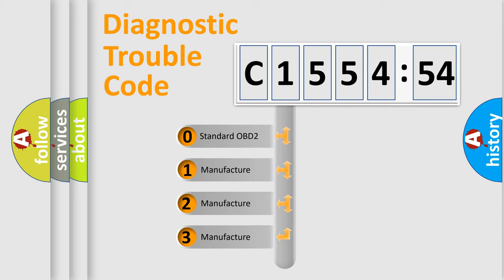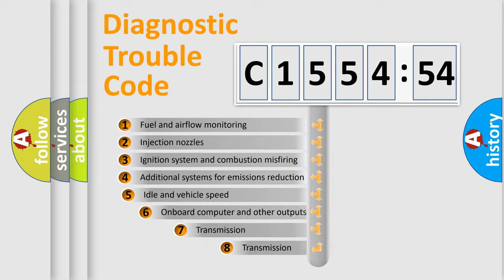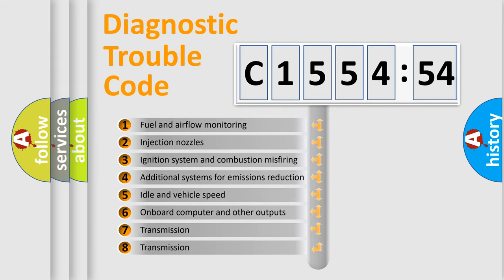This distribution is defined in the first character code. If the second character is expressed as zero, it is a standardized error. In the case of numbers 1, 2, 3, it is a car-specific error.